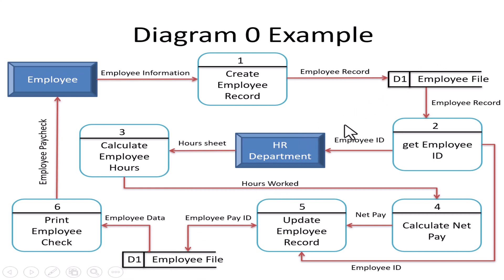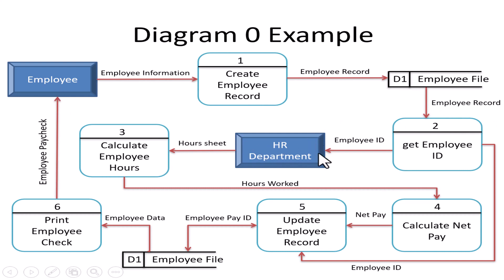To summarize the contact rules: external entity and data store cannot directly contact each other; external entity and external entity cannot directly contact each other; and data store and data store cannot directly contact each other.